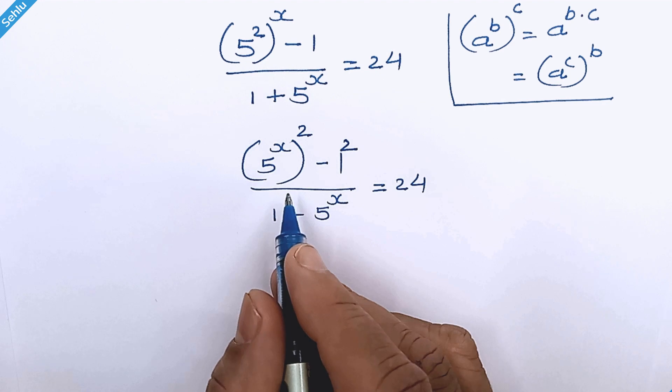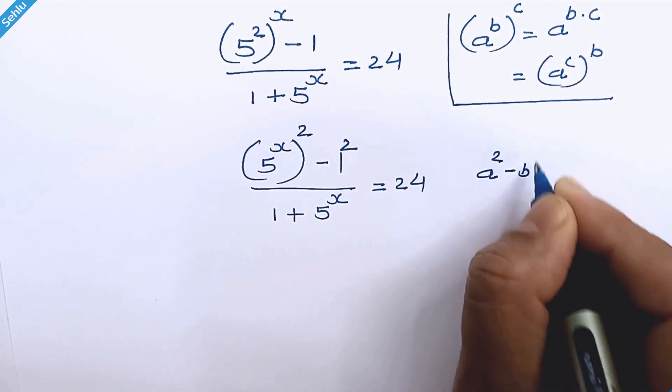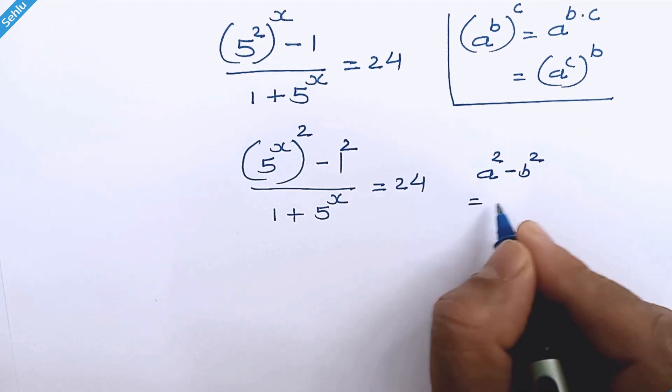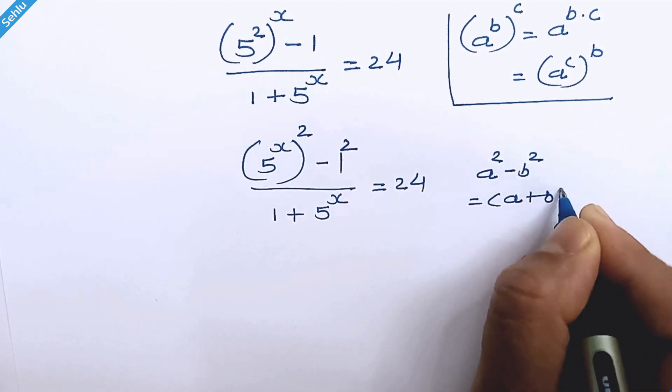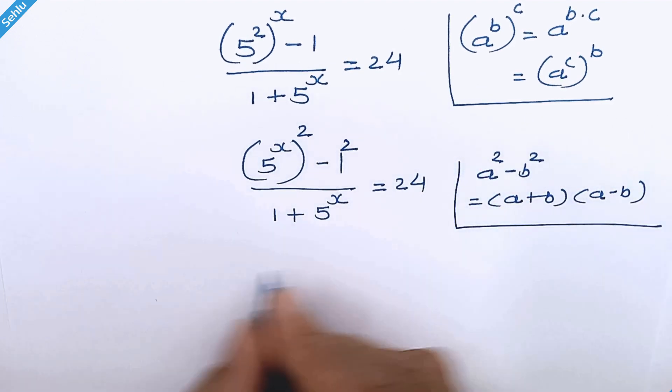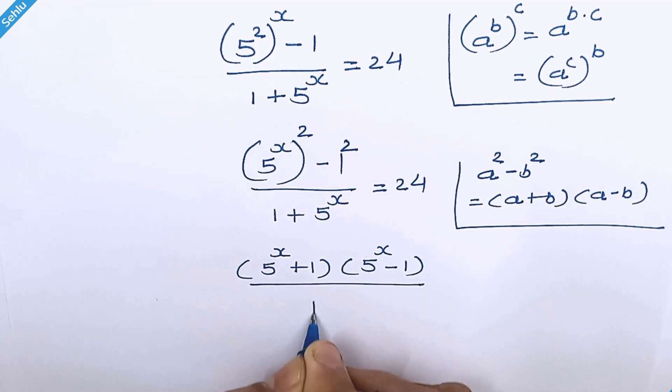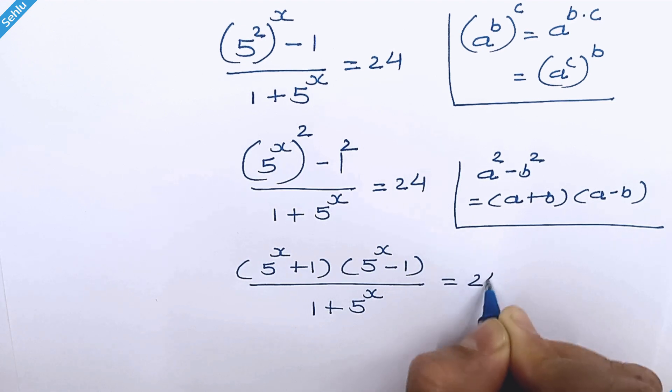Now here we have difference of the square's identity like a square minus b square is equal to a plus b times a minus b. So here we can write 5 raised to x plus 1 times 5 raised to x minus 1 over 1 plus 5 raised to x is equal to 24.